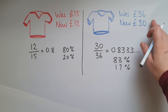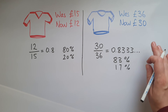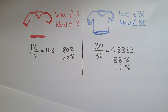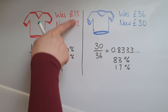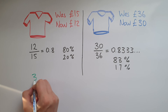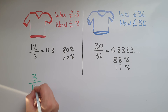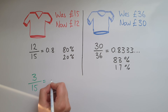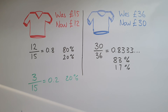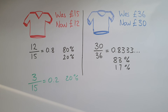Whereas for the blue shirt there's been a six pound discount, but that is only about 17% of the original price. You could also have worked out the discount directly: three pounds out of 15, which is 0.2, or 20%. So that gives us the discount as a percentage right away.